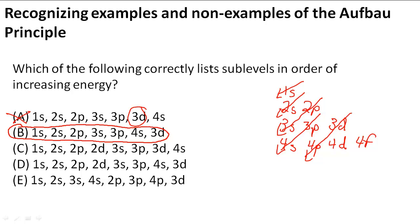But let's check the others just to make sure that they are also incorrect. So 1s, 2s, 2p, 2d... both of these have a 2d. And the energy level 2 does not have a d sublevel. So C and D are out.